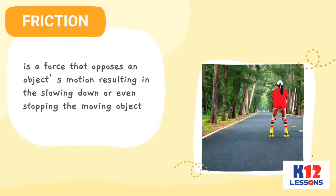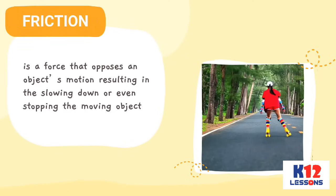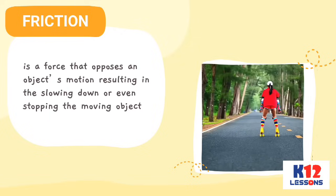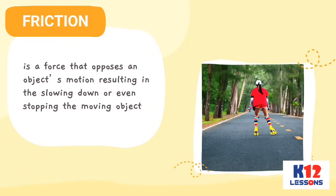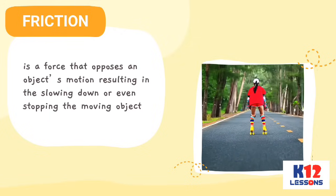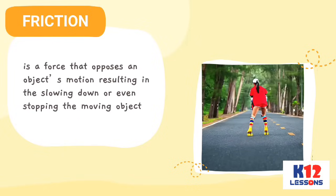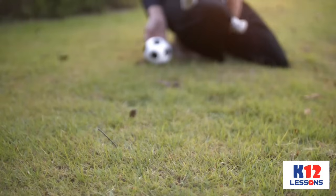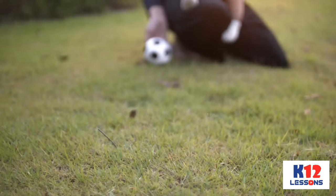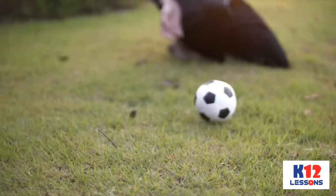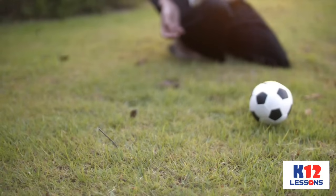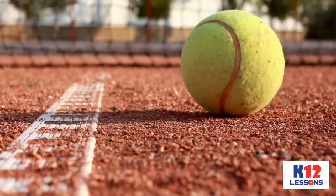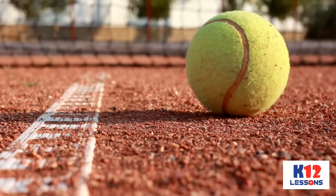Friction is a force that opposes an object's motion, resulting in the slowing down or even stopping of the moving object. In the activity, when the ball was pushed, it rolled on the floor and stopped after a few seconds. It is the friction between the ball and the floor that caused the stopping of the ball.